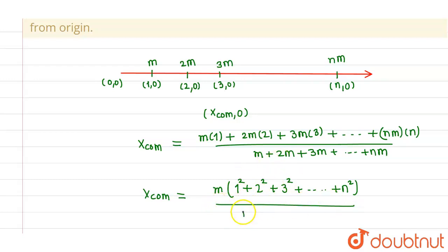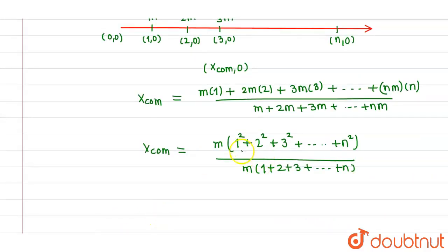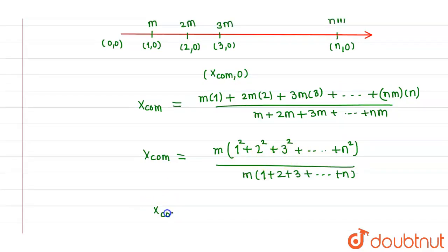Now if you take m common from the denominator, then you will be having m into (1 plus 2 plus 3, so on up to n). So this is the sum of squares of natural numbers, and the formula for same is given by x_com equals to, this m will cancel out.